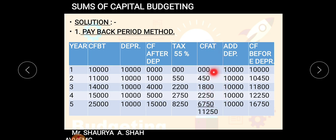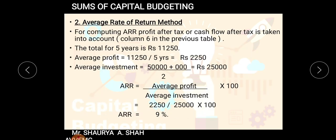The total of the cash flow after tax column for five years is eleven thousand two hundred fifty. So average profit for five years is 11,250 divided by 5, which gives an average profit of 2,250. The ARR formula is: average profit divided by average investment. We have found average profit as 2,250.